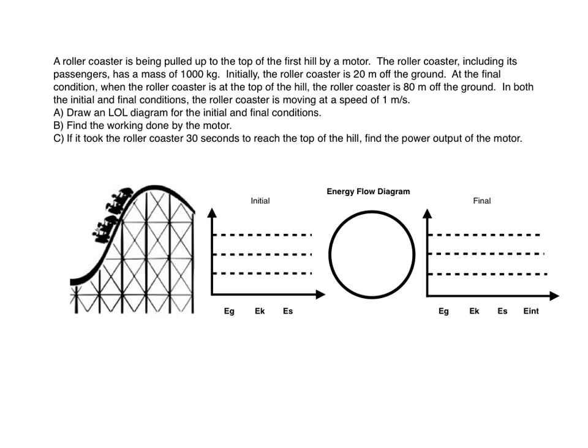Alright, so in this problem, let's take a look. A roller coaster is being pulled up to the top of the first hill by a motor. The roller coaster, including its passengers, has a mass of 1,000 kilograms. Initially, the roller coaster is 20 meters off the ground. At the final condition, when the roller coaster is at the top of the hill, the roller coaster is 80 meters off the ground. In both cases, the initial and final conditions, the roller coaster is moving at a speed of 1 meter per second.